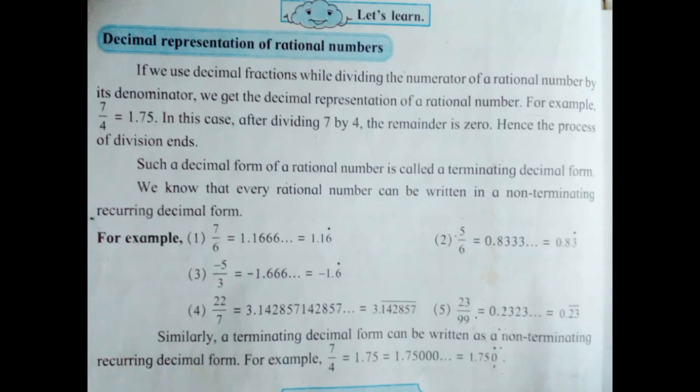Decimal Representation of Rational Numbers. If we use decimal fractions by dividing the numerator of a rational number by its denominator, we get the decimal representation of a rational number. For example,